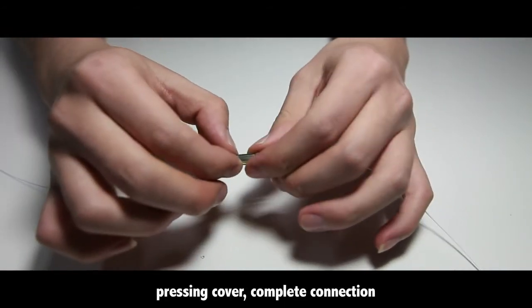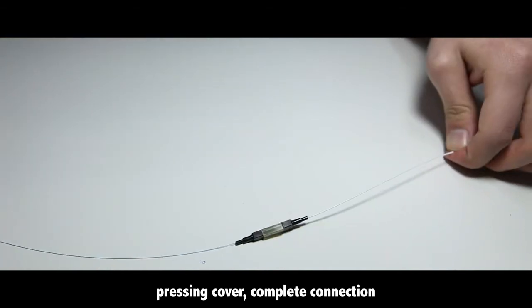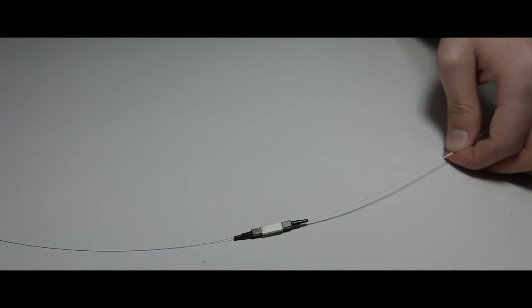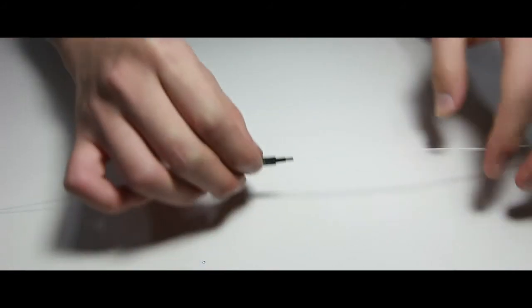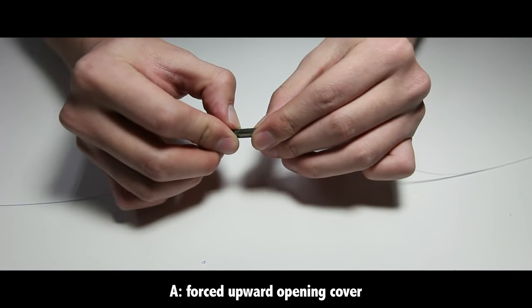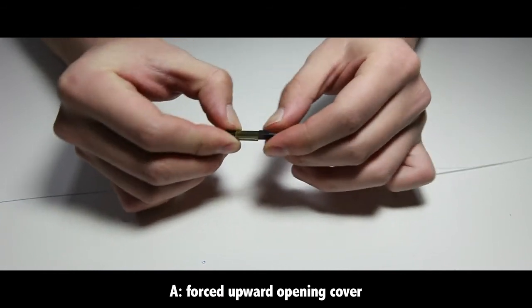From the 0.25mm optical fiber end, insert into the 0.25mm optical fiber insertion end. Push on the push pipe. Press the cover to complete the connection.